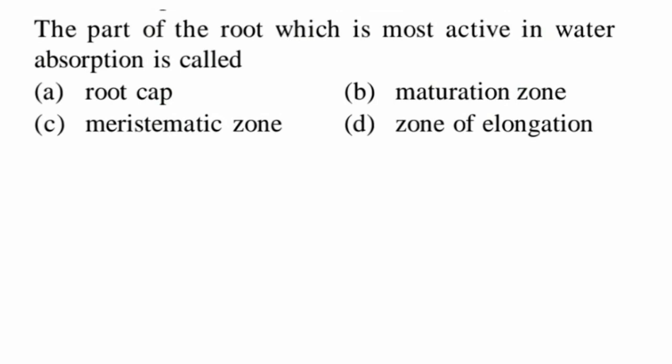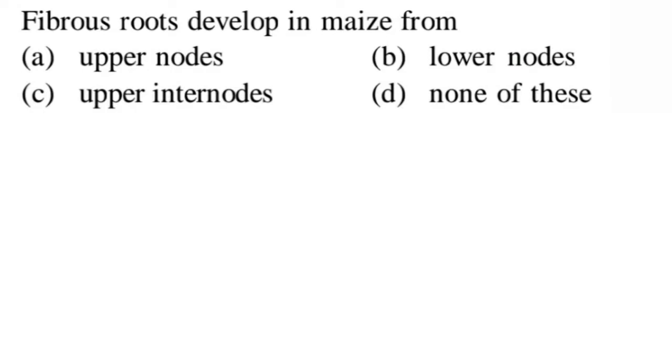Next question: the part of the root most active in water absorption. Looking at the regions of the root — the maturation zone has root hairs present, and water and mineral absorption is very high here because of the tiny root hairs. Root cap provides protection, meristematic zone has high cell division, and zone of elongation is where the root elongates. So option B, the maturation zone, is the correct answer.